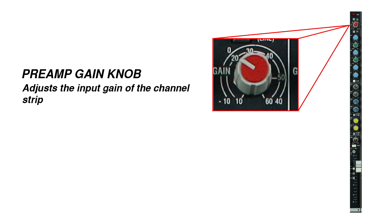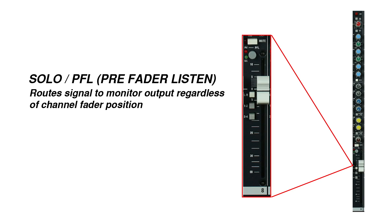The direct output will output the signal directly after the preamp, meaning that it's not affected by the EQ, the compression, or the other effects on the mixer. The channel fader also won't affect the direct outputs.